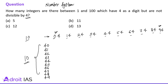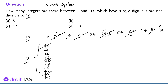Note that 44 is repeated in both groups. The question asks for numbers that have 4 as a digit but are not divisible by 4. So we need to identify and remove those divisible by 4. Among the units-place group, 5 numbers are divisible by 4, leaving 7 numbers. Among the tens-place group, the remaining count gives 5 more numbers.